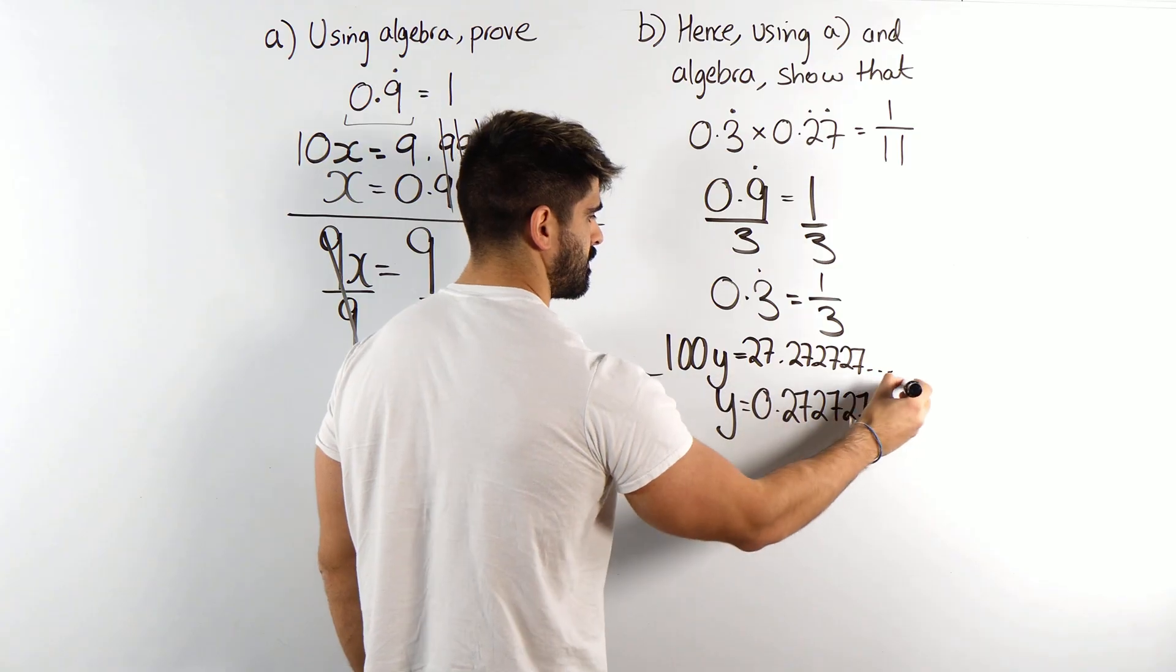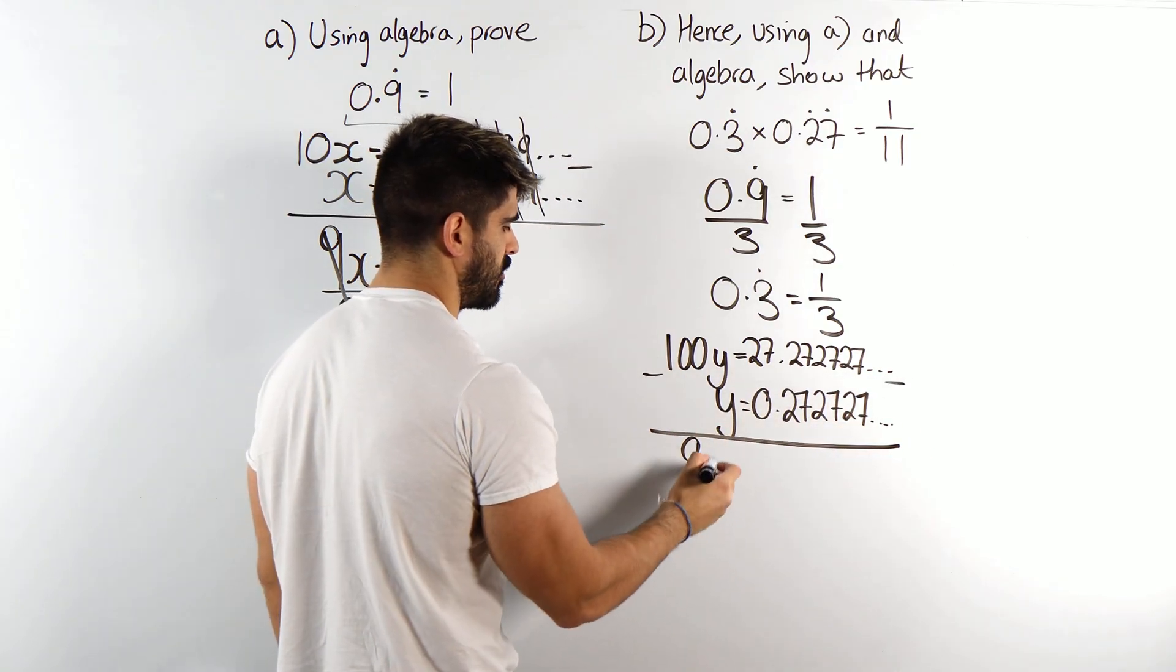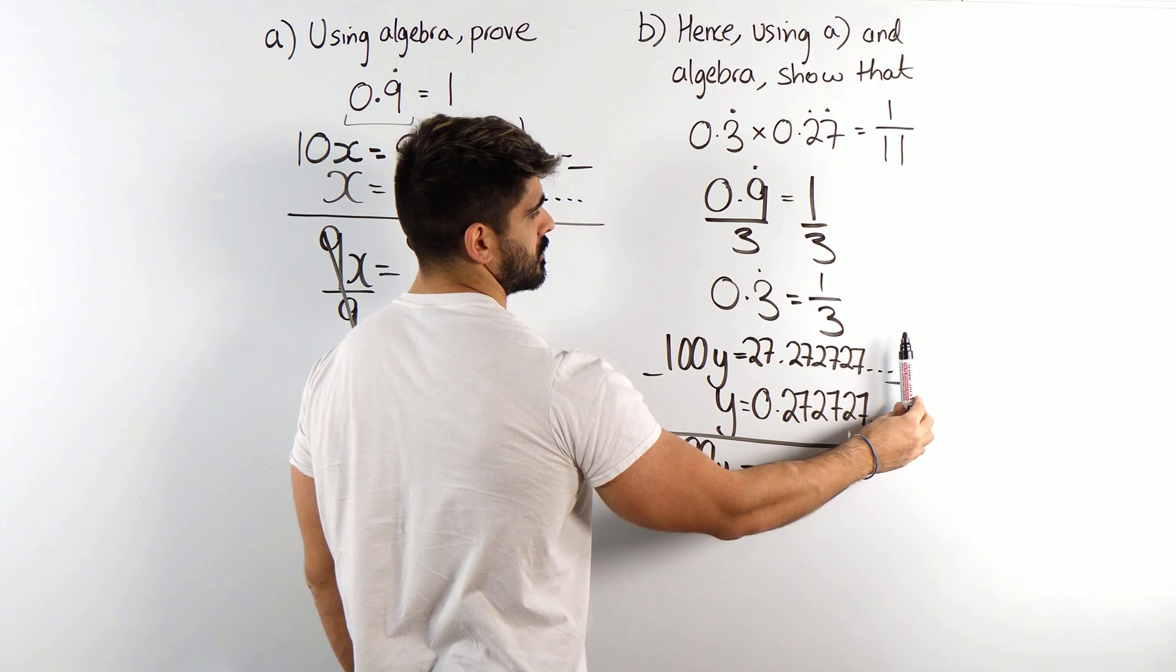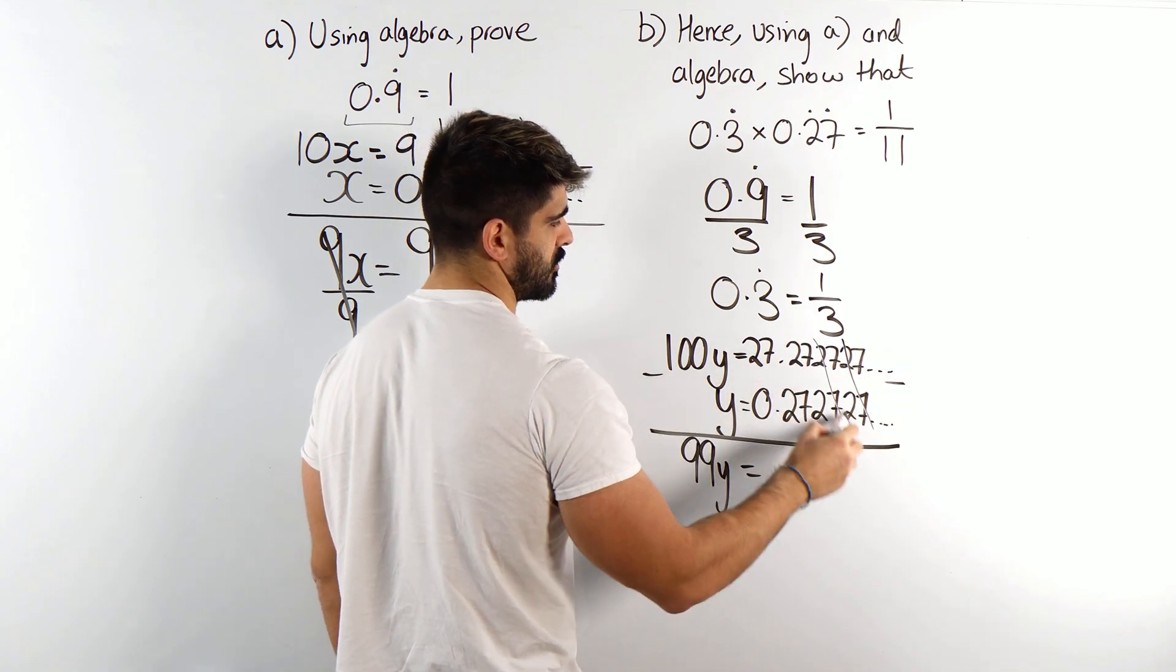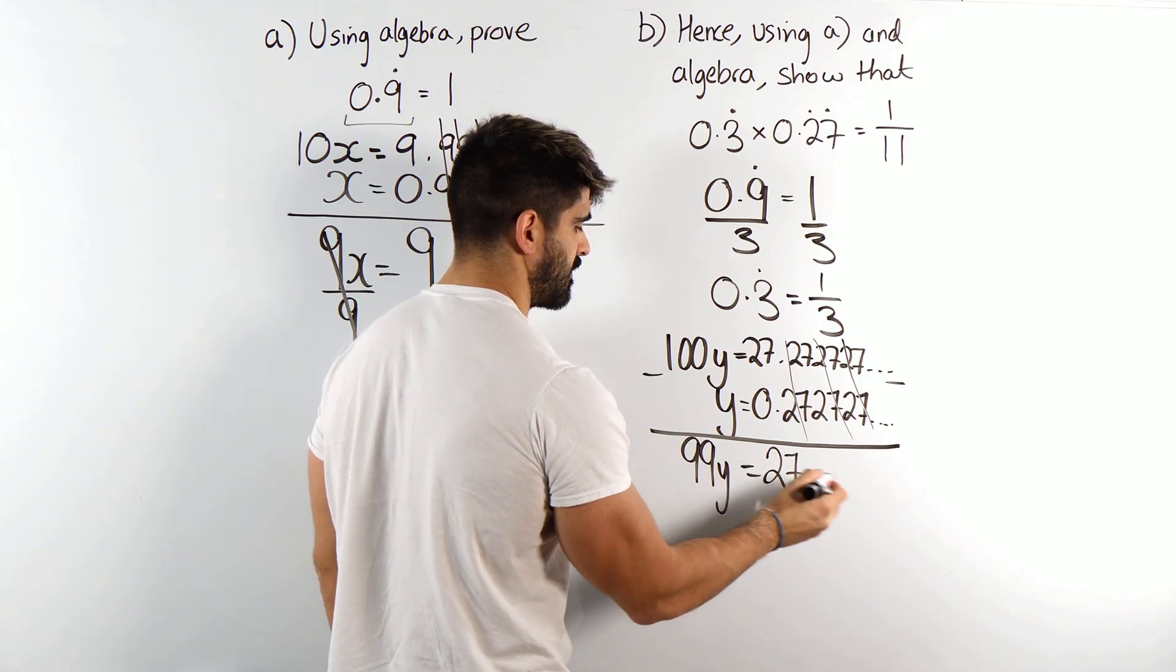Then we minus. 100y minus y is 99y. We're going from right to left. All those 27's, they're all just cancelling. We're left with 27 minus 0, which is just 27.